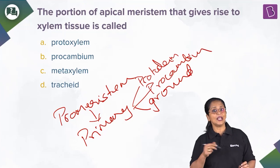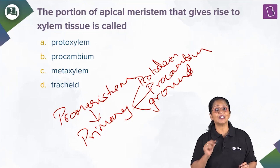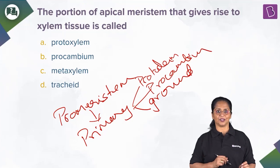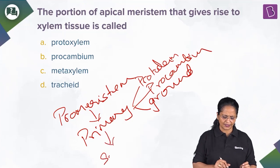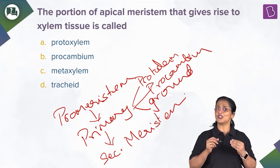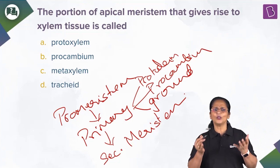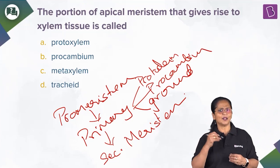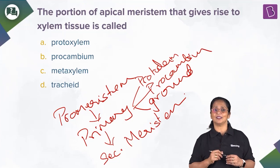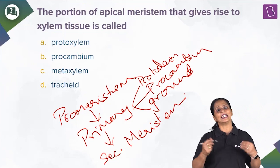The protoderm gives rise to the epidermal layers. The procambium gives rise to the vascular tissues — that is, the xylem and phloem. The ground meristem gives rise to the cortical region. The primary meristem later gives rise to the secondary meristem, where permanent tissues regain the ability to divide through a process called de-differentiation.